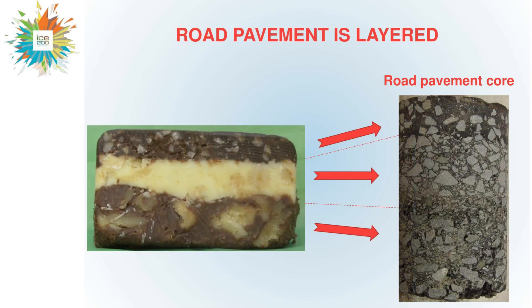However, road pavement is actually multi-layered, as you can see here. Here you can see a core extracted from a road. The closer you get to the surface, the thinner the layer becomes — the aggregates get smaller, but the layer is denser and more resistant to the load.